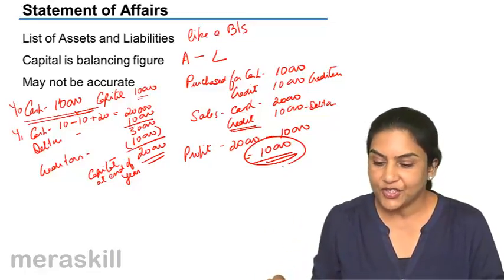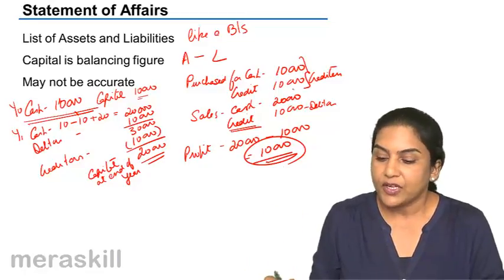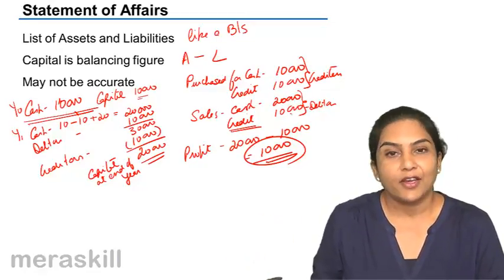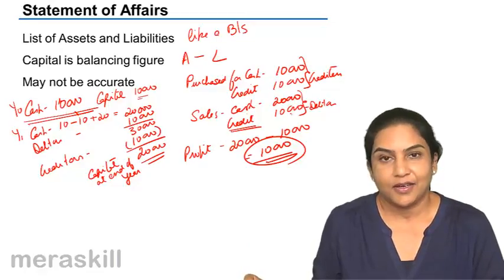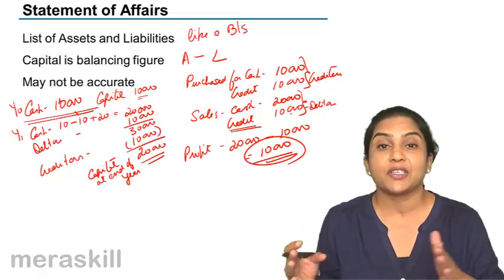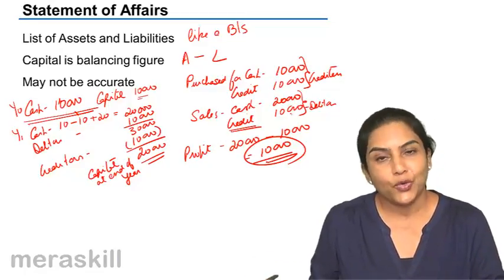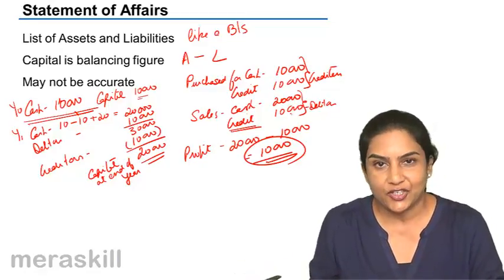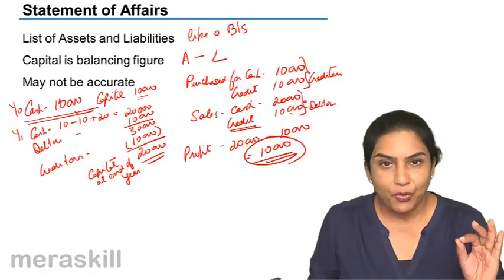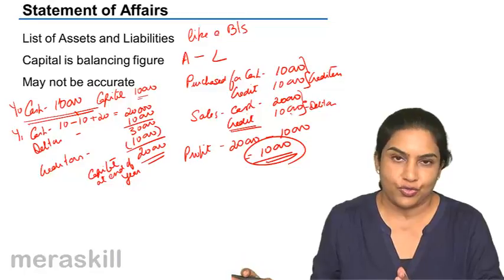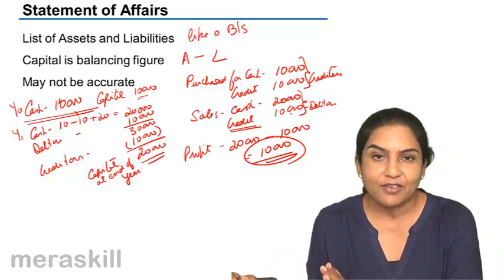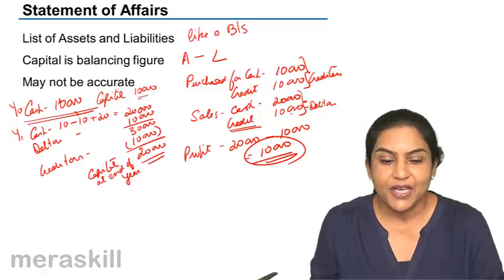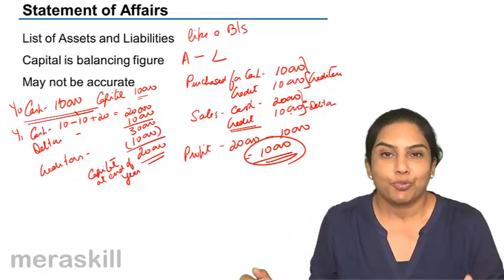Is that logically correct? Let us check. Total purchases were 20,000 and total sales were 30,000. Sales minus purchases: 30,000 minus 20,000 is 10,000. Therefore profit is 10,000, as we can logically conclude — had we prepared a trading account under double entry, we would get the same result. In simple terms: when capital grows from 10,000 to 20,000, a profit of 10,000 was made. This is the statement of affairs method.